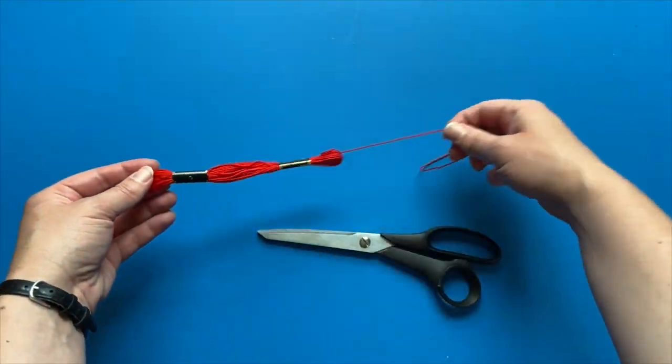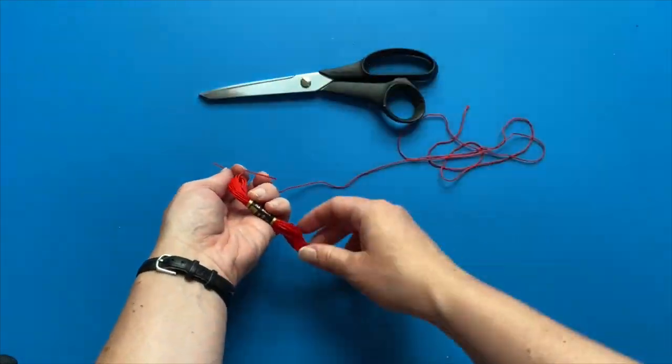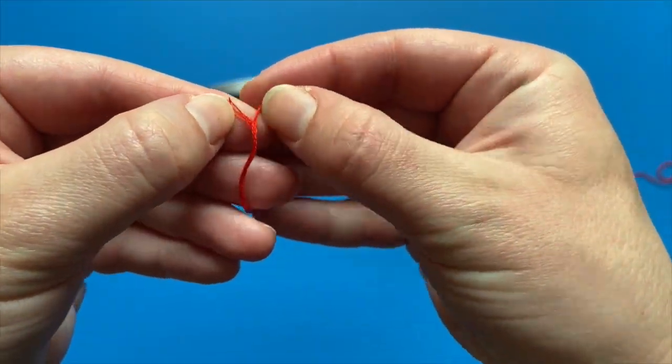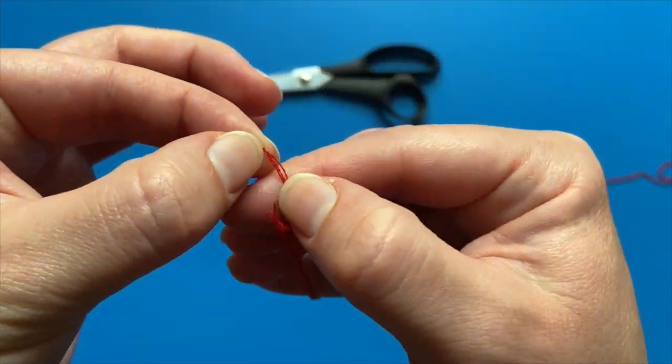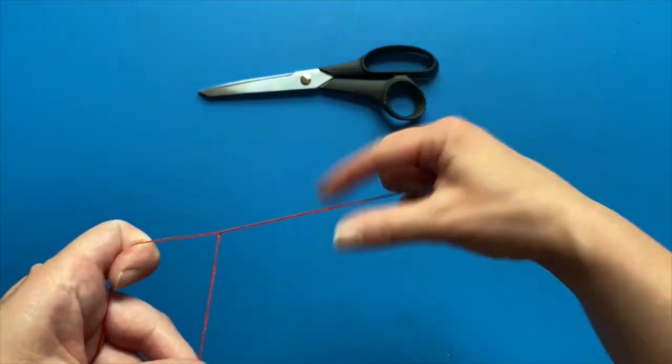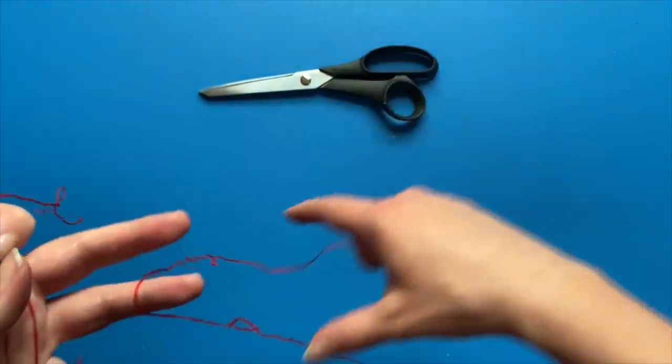To use embroidery floss, you will want to cut a length about 20 to 30 inches long, then split the six small threads into two strands of three, like this. Once you've divided the thread, take your first set of three strands and thread your needle.